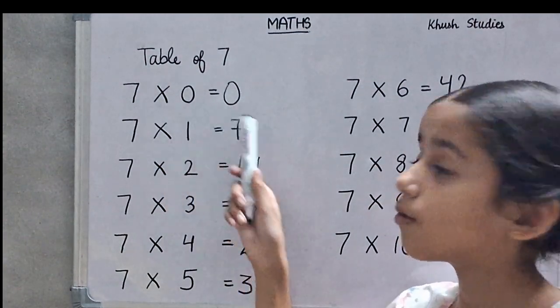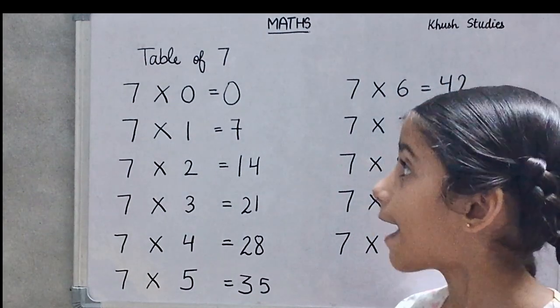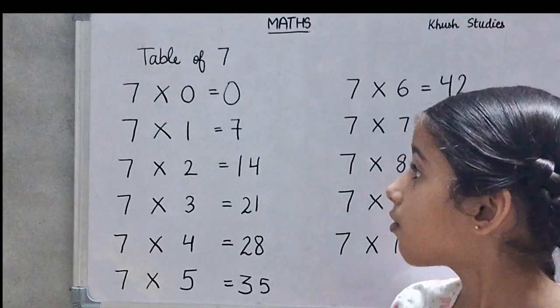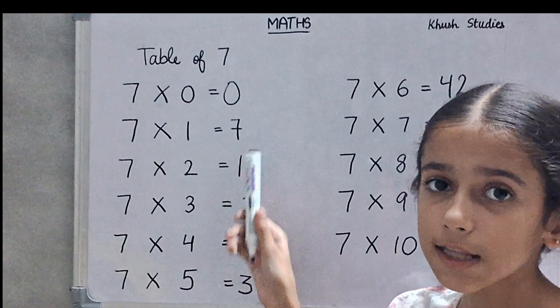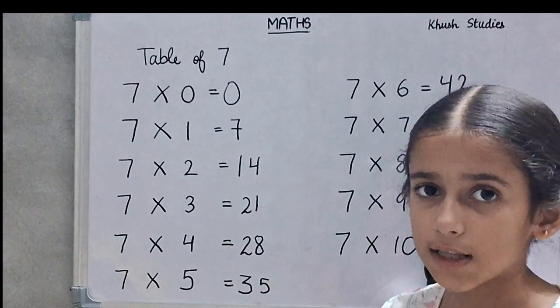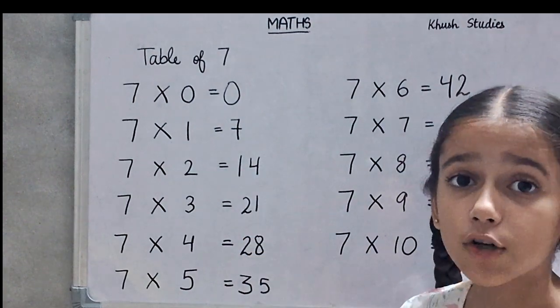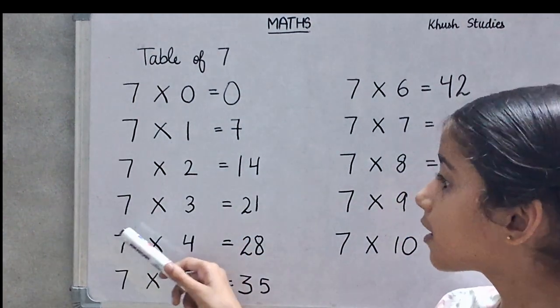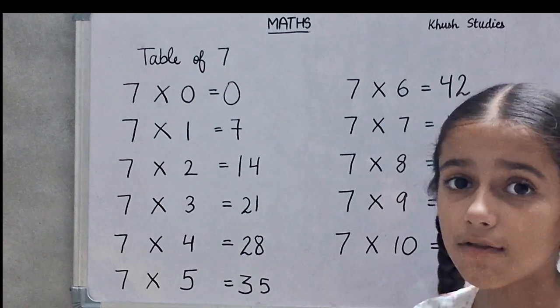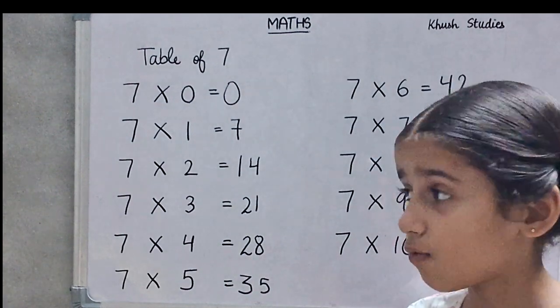7 zeros are 0. 7 zeros are 0. 7 ones are 7. 7 ones are 7. 7 twos are 14. 7 twos are 14. 7 threes are 21. 7 threes are 21.